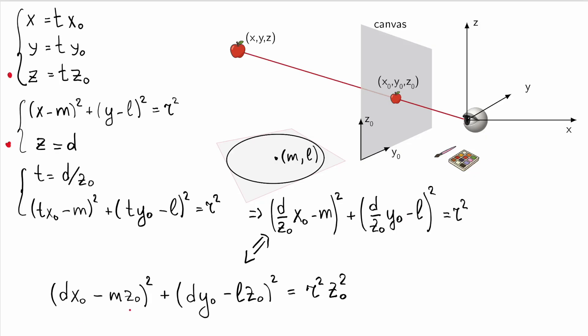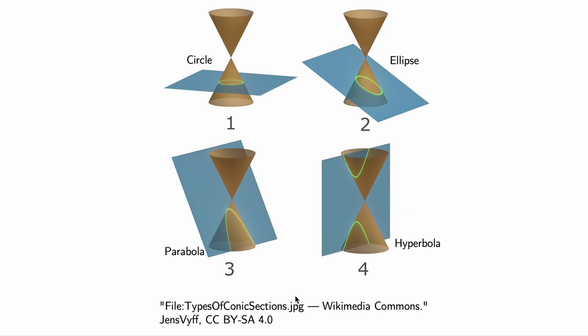Mathematically, this is a second-degree curve in Y0 and Z0 which means it can only be an ellipse, a hyperbola or a parabola. There are no other options.